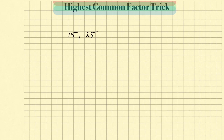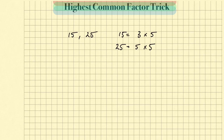Now I'll show you the traditional way of finding the highest common factor. You're going to break down each one of these numbers into all of its factors, and then find which ones are similar. So for 15, that's 3 times 5. And the number 25 equals 5 times 5. Then all we're going to do is match them one for one.